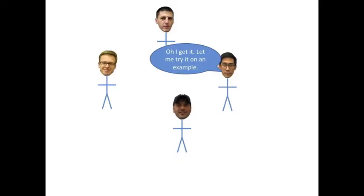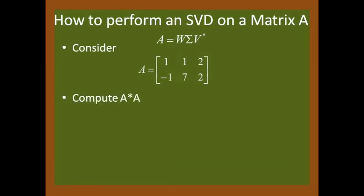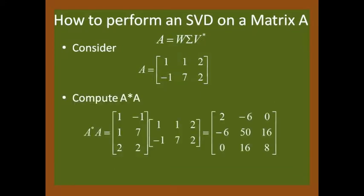Oh, I get it. Let me try an example. Here's a 2 by 3 A matrix. First step is to compute A adjoint A. Here, we end up with a 3 by 3 matrix.